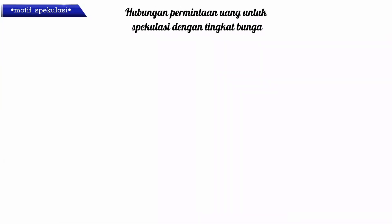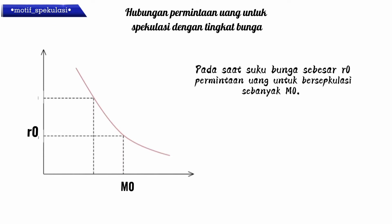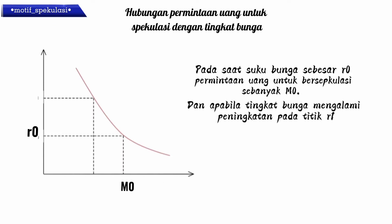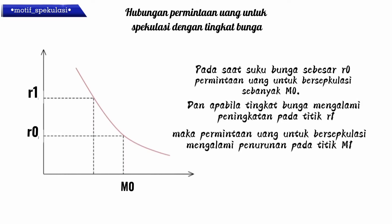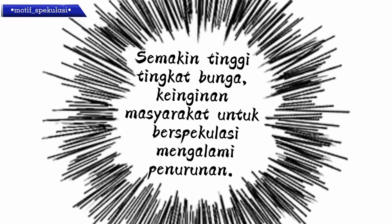Hubungan antara permintaan uang untuk spekulasi dengan tingkat bunga. Pada saat suku bunga sebesar R0, permintaan uang untuk berspekulasi sebanyak M0. Dan apabila tingkat bunga mengalami peningkatan pada titik R1, maka permintaan uang untuk berspekulasi mengalami penurunan. Dengan ini, menunjukkan bahwa hubungan antara permintaan uang untuk spekulasi dengan tingkat bunga adalah negatif. Semakin tinggi tingkat bunga, keinginan masyarakat untuk berspekulasi mengalami penurunan.